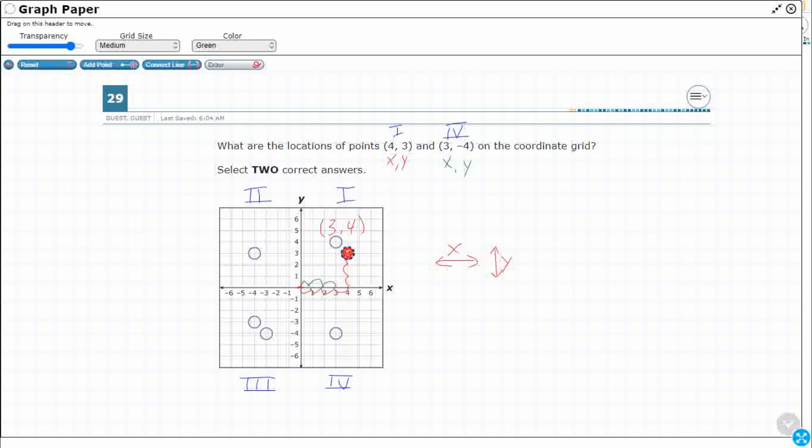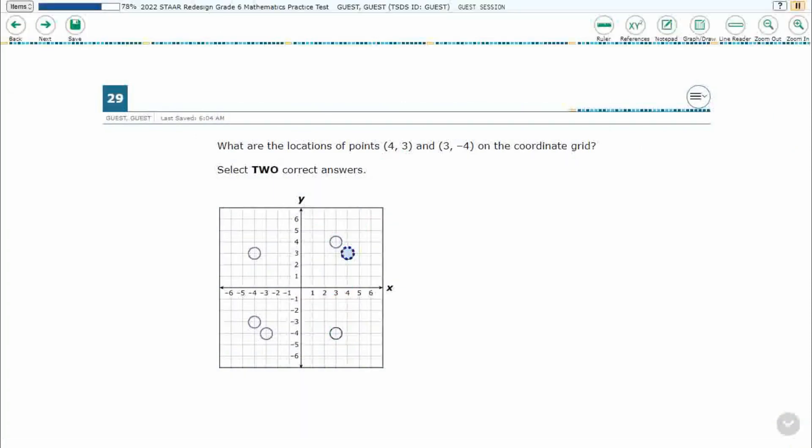And then you notice my Y is a negative 4. So that means I need to go down on my Y axis. There's really only one down there, but let's just go ahead and check it out. One, two, three, and four. All right. So if we see our second point is going to be the only point that is down there in quadrant four.